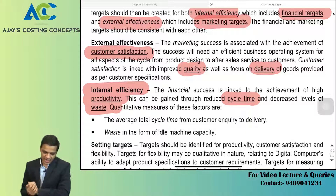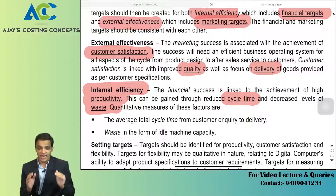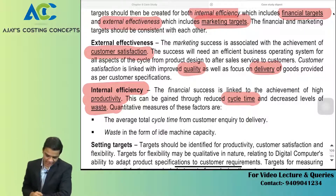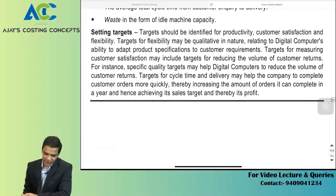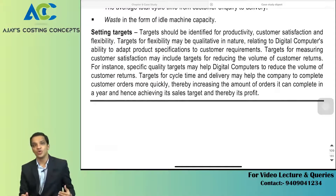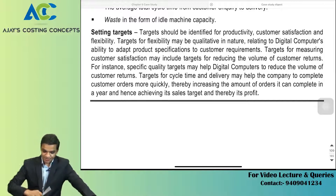Internal efficiency: financial success is linked to the achievement of high productivity. To achieve high productivity, reduce cycle time and decrease waste as much as possible. This can be gained through reduced cycle time and decreased level of waste. Quantitative measures include average total cycle time from customer inquiry to delivery, and waste from idle machine capacity. Finally, targets should be identified for productivity, customer satisfaction, and flexibility — setting specific targets for each of these dimensions to ensure objectives can be achieved.